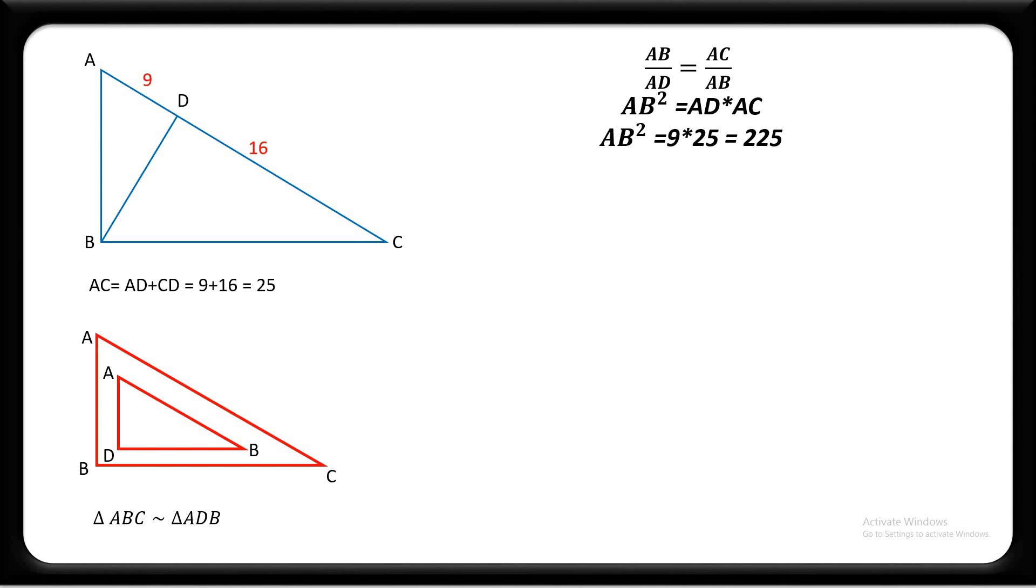Take the square root of both sides and we get AB equal to 15. Similarly, using the similarity of triangles, we can find out BC squared equals CD multiplied by AC.